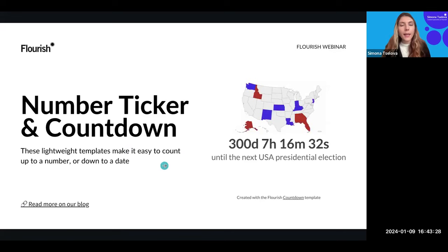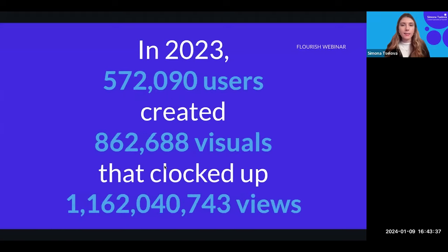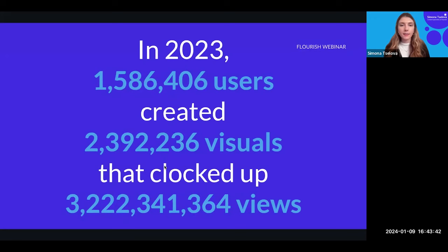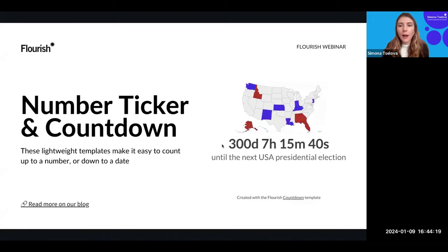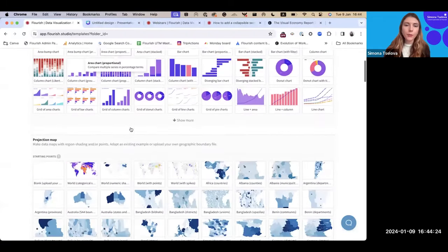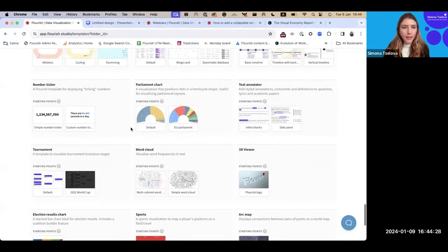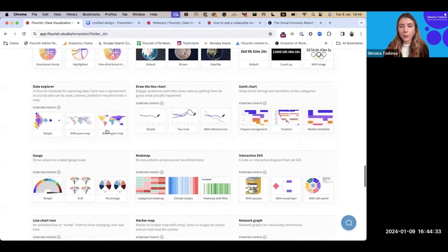The number ticker is an amazing kind of opening slide for presentations — a very fun way to present reports and numbers in a more engaging way. For example, we have a number ticker that showcases how many visualizations, users, and views all Flourish creations have accumulated in the past 12 months. These two templates also don't have a data tab, making them extremely easy to use. Here you can see a number ticker, or alternatively the countdown template, with a starting point that is a countdown with an image — for example, counting down to the Olympics.